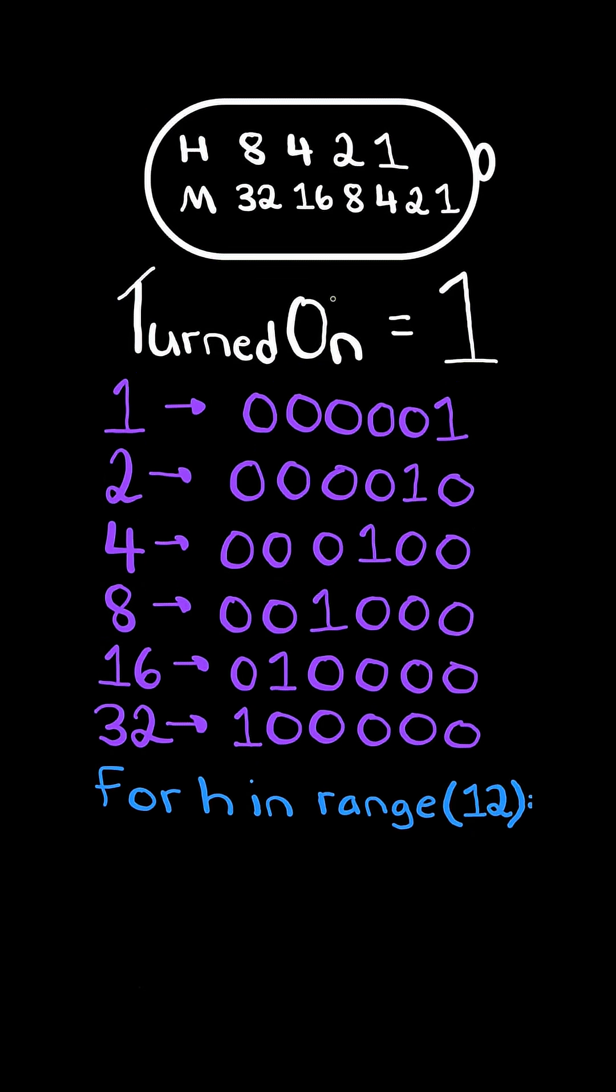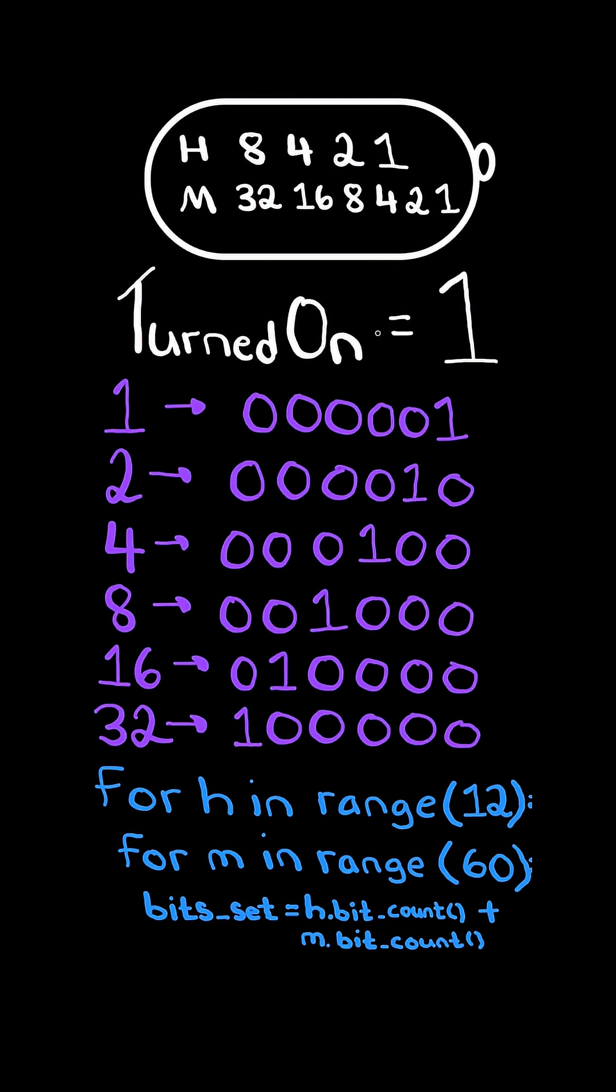The idea is to iterate through all possible hours in the range 0 to 12, with an inner loop iterating through all possible minutes in the range 0 to 60, calculating the total number of bits set by taking the hour bits and adding them to the minute bits.